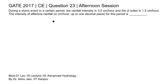The rainfall intensity is given as 3.5 centimeter per hour. The phi index means the average abstraction from the precipitation. So if we subtract this phi index from the rainfall intensity, then we get the intensity of effective rainfall.